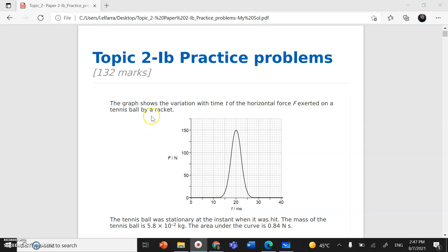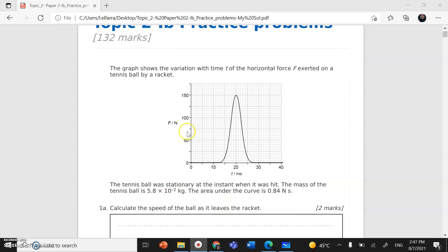The first question says you have a graph that shows the variation of force versus time, force in newtons, time in milliseconds. You have to be careful with the units. This force is exerted on a tennis ball by a racket. The tennis ball was stationary at the instant when it was hit.